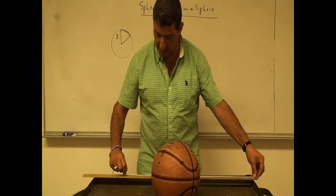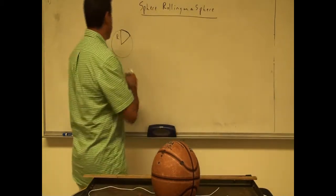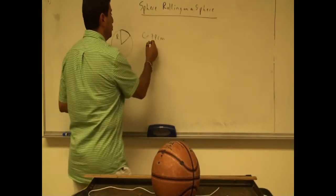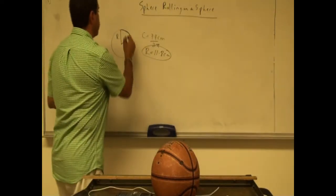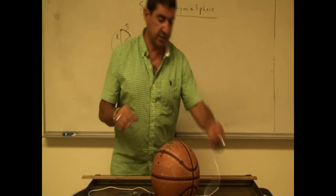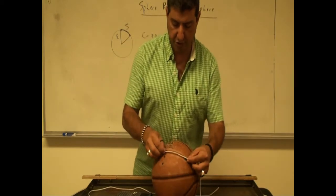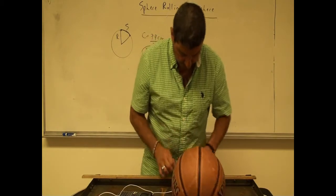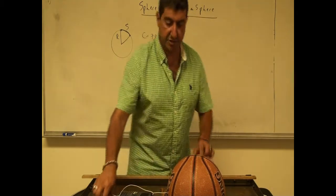Now the basketball is 74 centimeters approximately, so the circumference is 74 centimeters. And of course, if I divide that by 2π, that gives me the radius of the sphere. Then I want to find out the arc length between when it started and when it left the ball. So I get this shorter string — it's going to be pretty short — just the distance between the two marks I made. So about 11 centimeters.